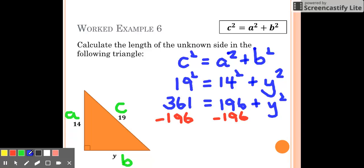Feel free to use your calculator if you're not confident. 361 minus 196 is 165. 196 take 196 is 0, and then this leaves me with Y squared over this side.